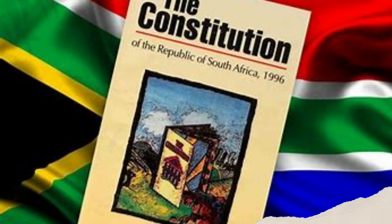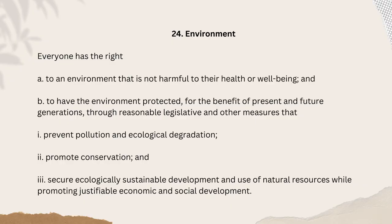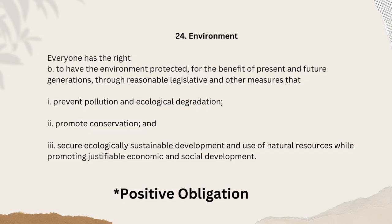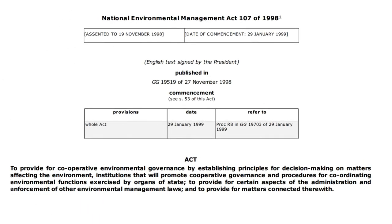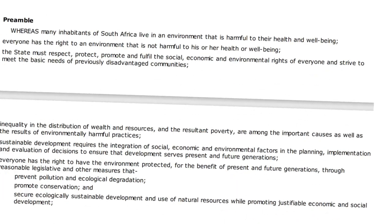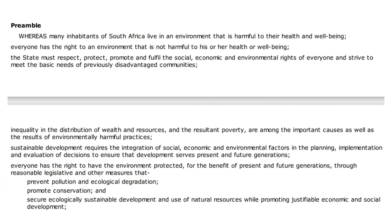This week we are going to be delving into the legislative framework regulating environmental law in South Africa. In terms of South African law, every piece of legislation has to be enacted to give effect to the Constitution. Section 24 of the Constitution gives everyone a right to a healthy environment, and requires the state to protect that right through reasonable legislative and other measures. As a result, the National Environmental Management Act was enacted in 1998 to give effect to Section 24.